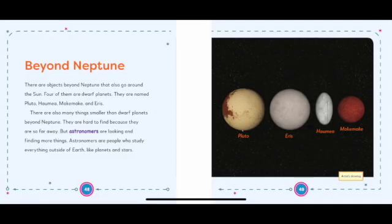Beyond Neptune. There are objects beyond Neptune that also go around the Sun. Four of them are dwarf planets. They are named Pluto, Haumea, Makemake, and Eris. There are also many things smaller than dwarf planets beyond Neptune. They are hard to find because they are so far away, but astronomers are looking and finding more things. Astronomers are people who study everything outside of Earth, like planets and stars.